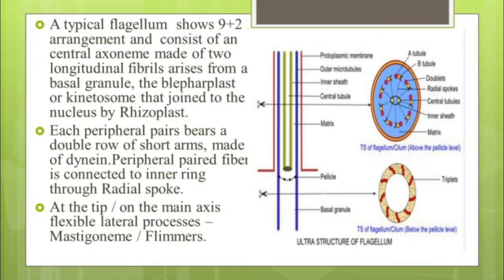A typical flagellum shows a 9+2 arrangement and consists of a central axoneme made up of two longitudinal fibrils. These two longitudinal fibrils arise from a basal granule called the blepharoplast, also known as a kinetosome, which is joined to the nucleus by a rhizoplast. Each peripheral pair bears a double row of short arms made of dynein protein. The peripheral paired fibers are connected to the inner ring through a radial spoke.